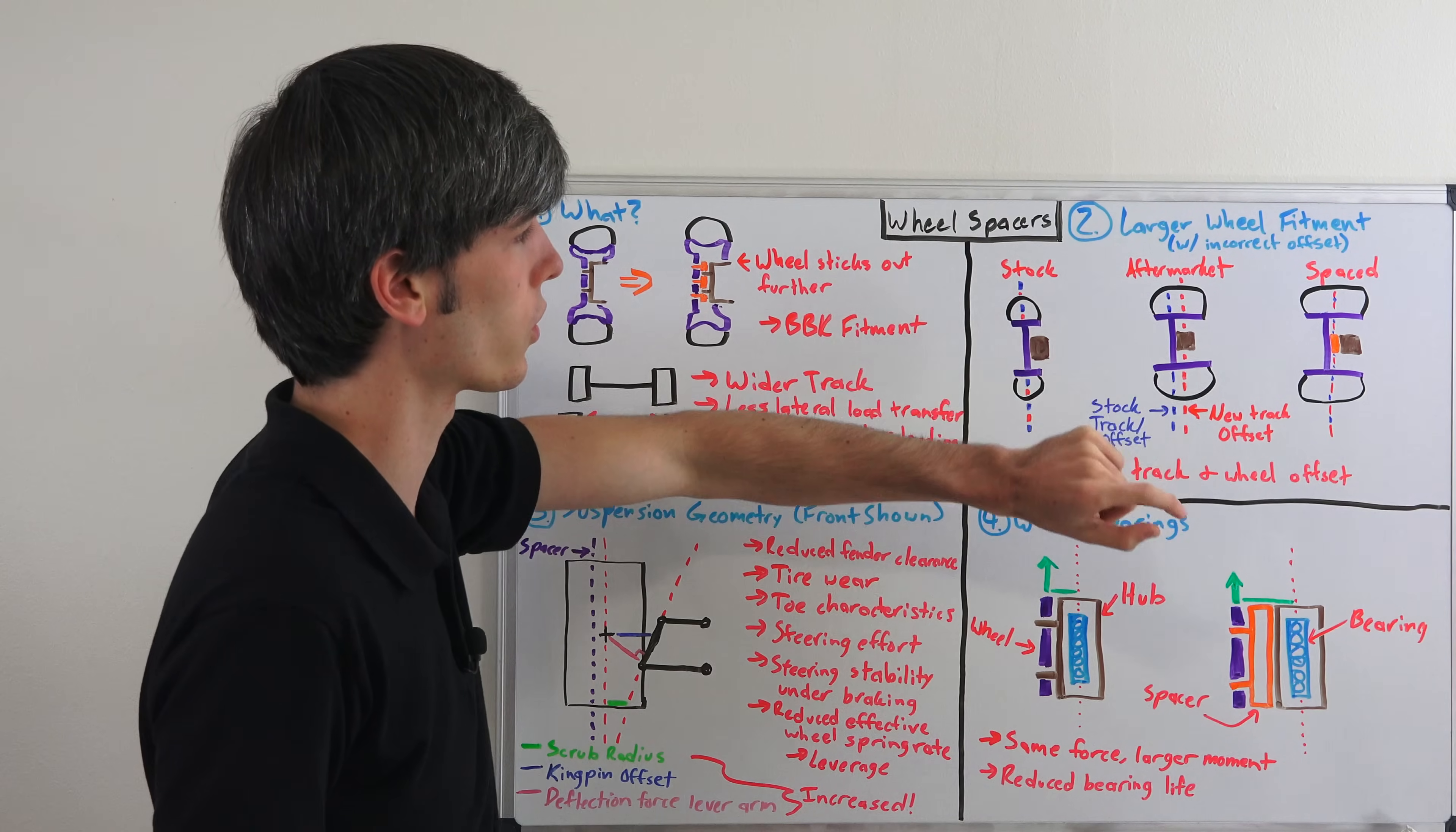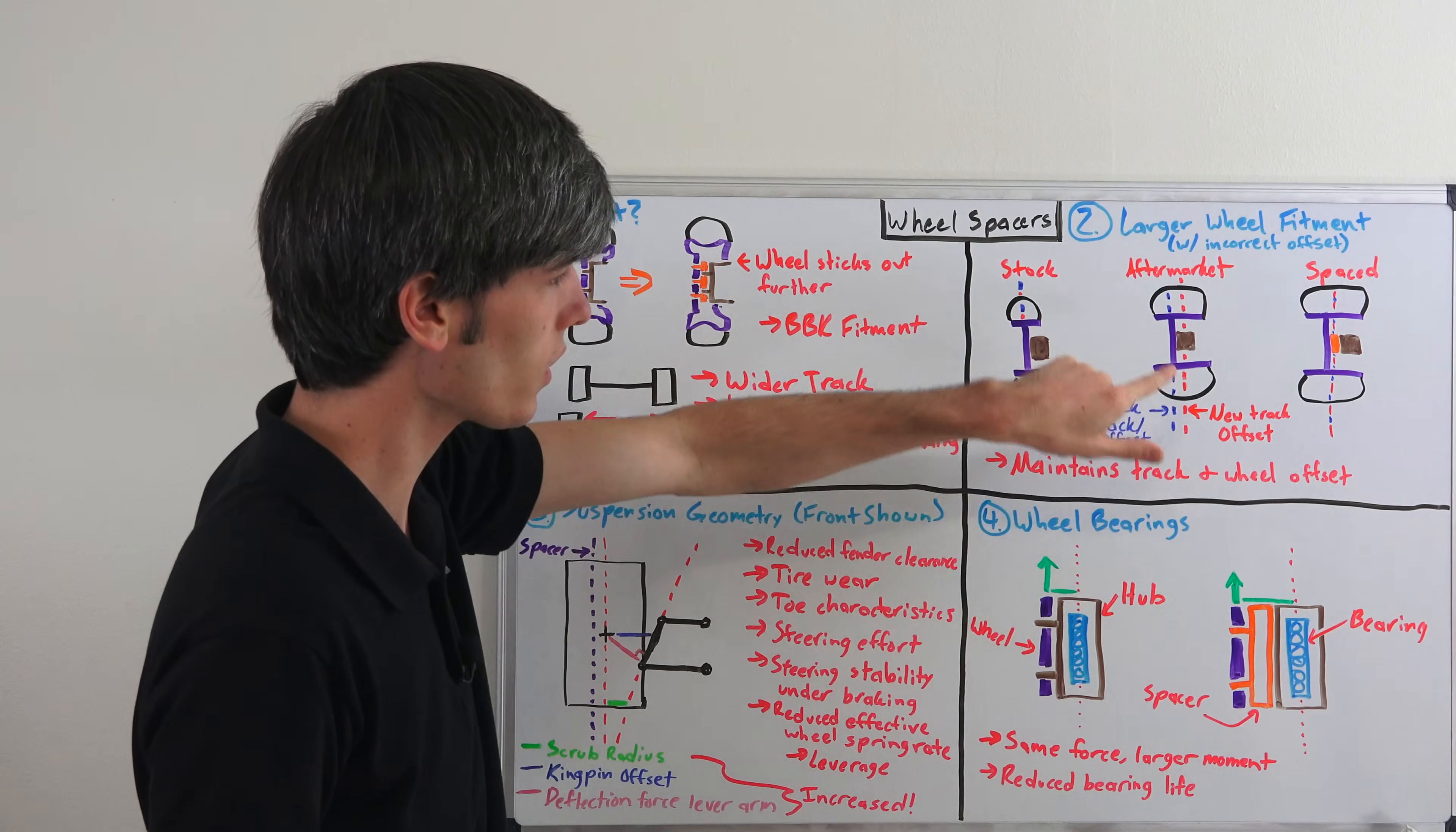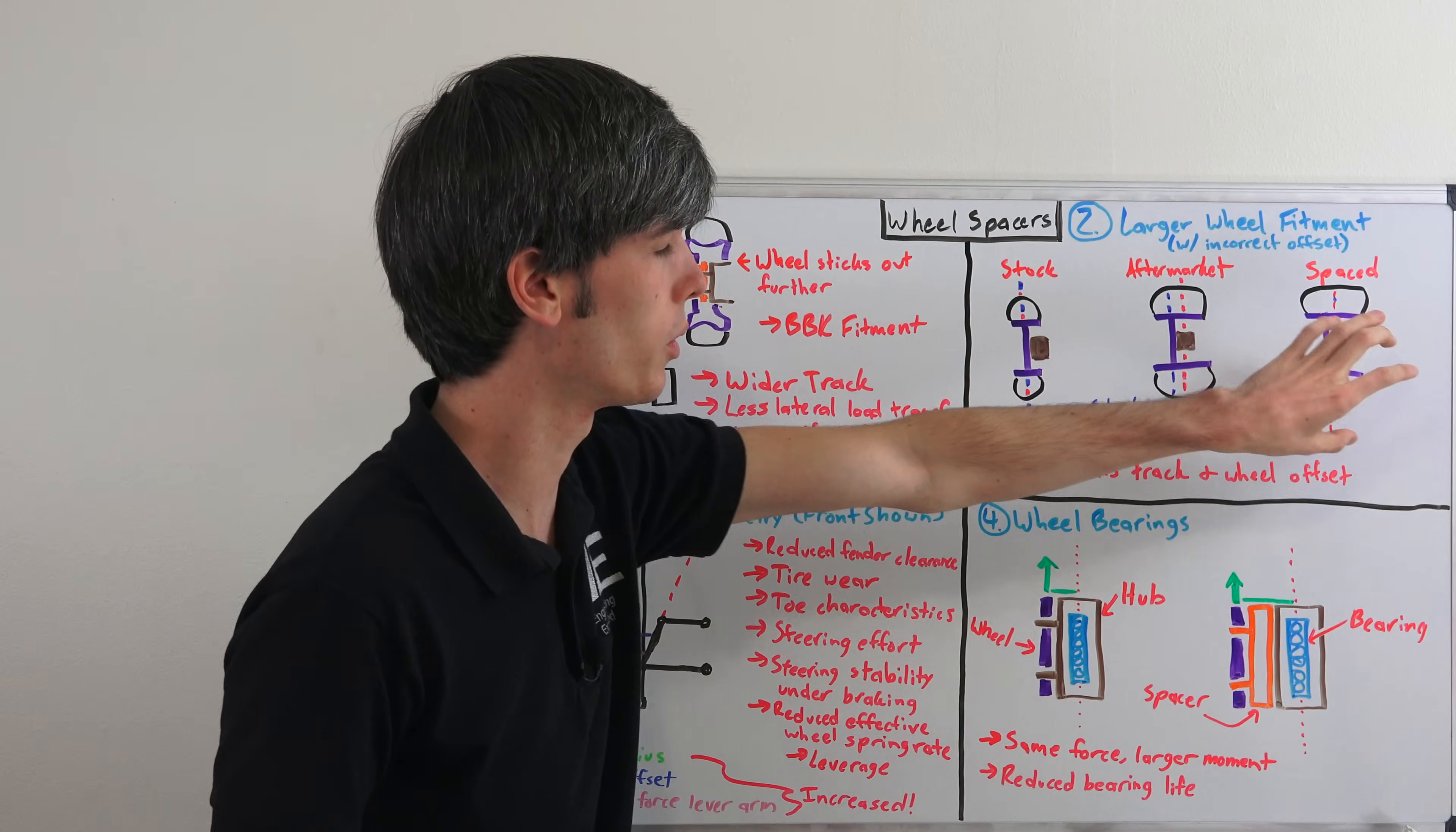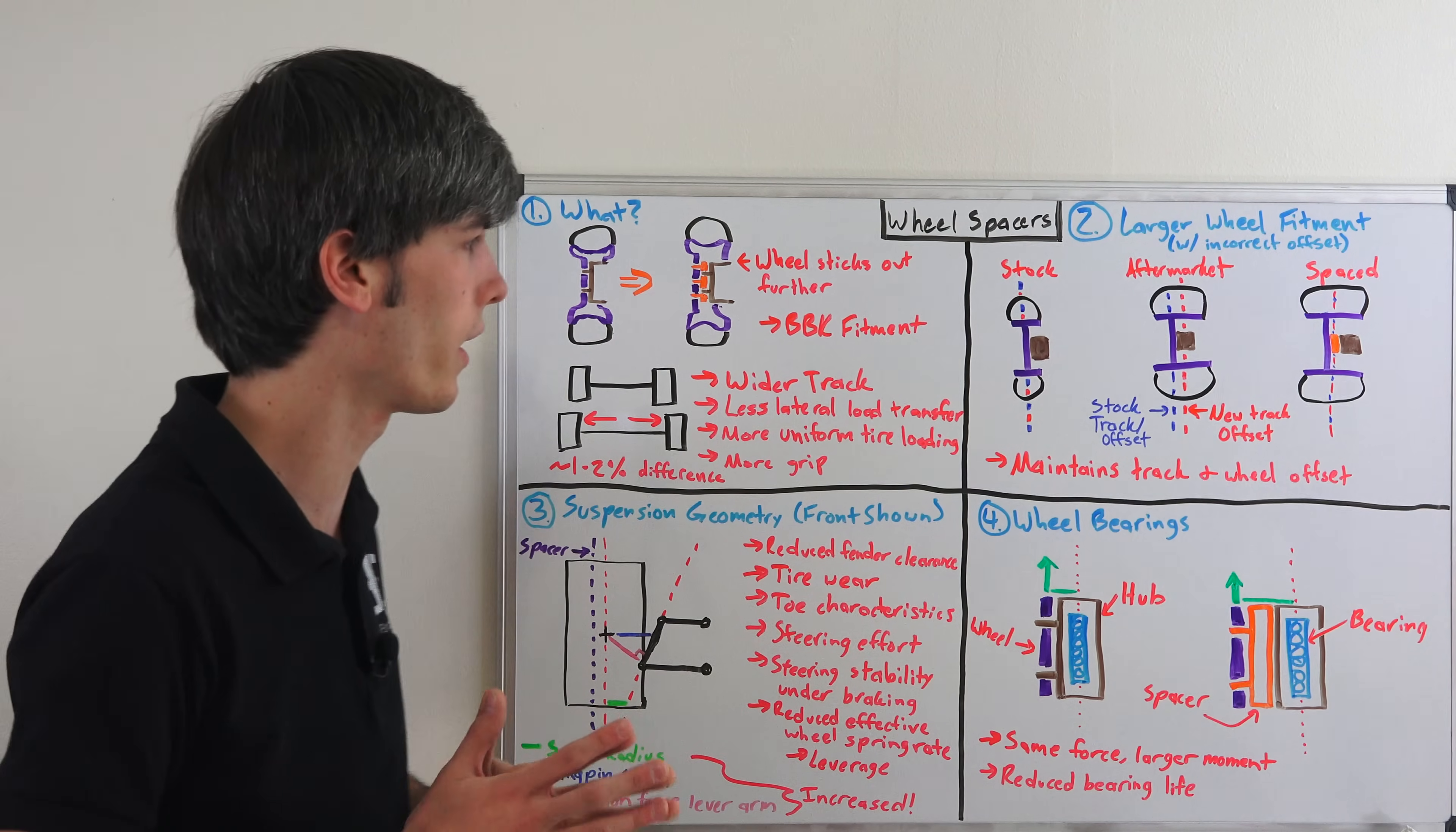And you've also reduced your track here with this aftermarket set of wider wheels. So instead you throw in a spacer, you push that wheel back out, you can maintain your same track and offset and have the benefit of wider tires.